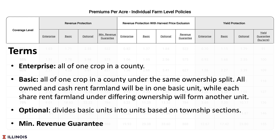Enterprise units are the aggregation used to determine the yield guarantee and the actual yield. Enterprise is all of one crop in one county — it takes all the corn policies and aggregates them into one enterprise unit. A basic unit is all of one crop in one county with the same ownership split, so owned land and cash rent land would be one basic unit, with a separate basic unit for each share rental arrangement. Optional units take those basic units and divide them out by township sections. Premiums are given for each product, along with the minimum revenue guarantee — the threshold below which you receive payments.